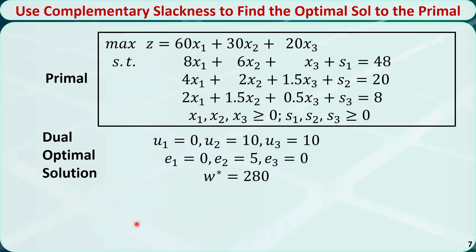Let's see how to use complementary slackness to find the optimal solution to the primal if we know the optimal solution to the dual. Here is the primal and the optimal solution to the dual. Let's apply the complementary slackness conditions.